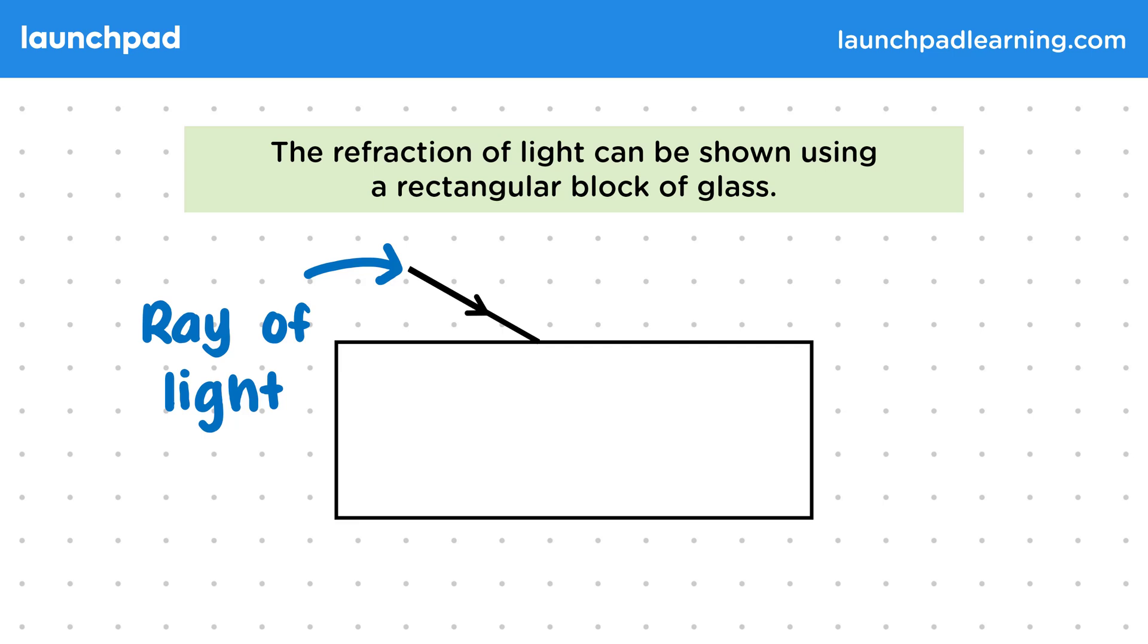Now we can't see the ray in the block, but if it were to travel in a straight line then we'd expect it to follow this path and then emerge from this point here.